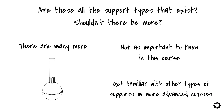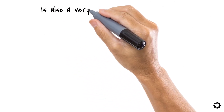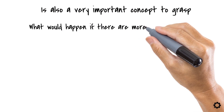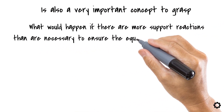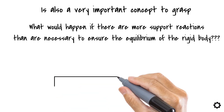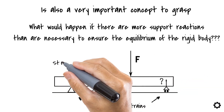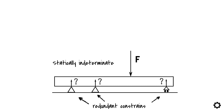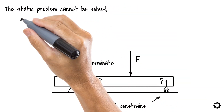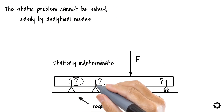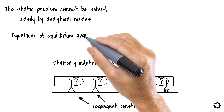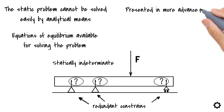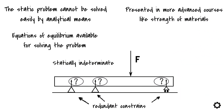For the final topic of this video, think about the following question: what would happen if there are more support reactions than are necessary to ensure the equilibrium of a rigid body? The body would have redundant constraints and it would become statically indeterminate. This means the static problem cannot be solved easily by analytical means, because there are more unknown support reactions than equations of equilibrium available. There is a way to handle this, but it is presented in more advanced courses like Strength of Materials.